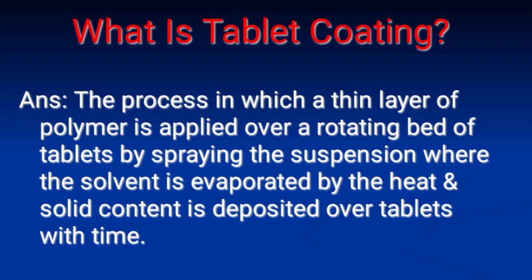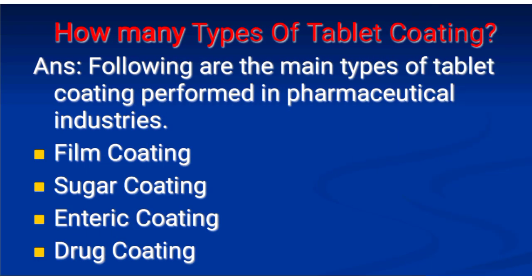Next: What is tablet coating? Answer: Tablet coating is the process in which a thin layer of polymer is applied over a rotating bed of tablets by spraying a suspension, where the solvent is evaporated by heat and solid content is deposited over the tablet with time. Types of tablet coating performed in pharmaceutical industries include: film coating, sugar coating, enteric coating, and drug coating.